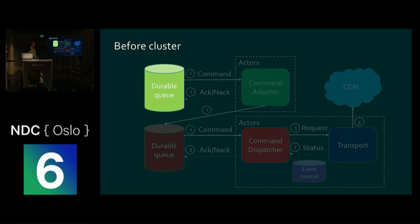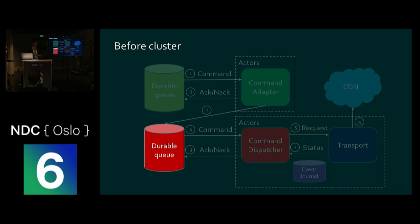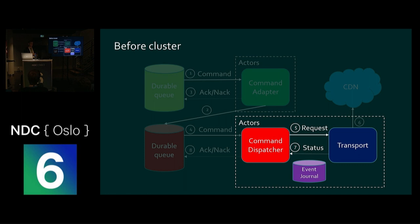It all starts with a set of durable queues implemented using RabbitMQ. This is the entrance to our system and the communication layer between us and all the other teams inside NRK that want to push our system to do actual work. We get information about new TV programs, radio, podcasts, subtitles — changes that need to be delivered to clients. We read those commands from the queues and fetch them into a set of Windows services, each implementing a system built on top of Akka.NET. These services serve as an anti-corruption layer.